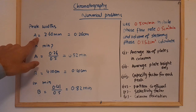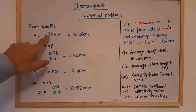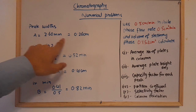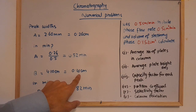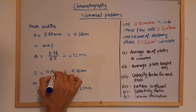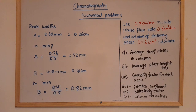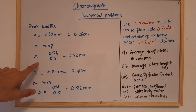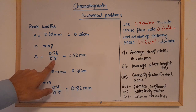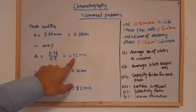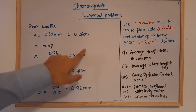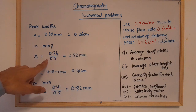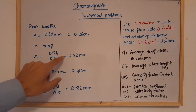For compound A, the peak width is 2.60 mm, which becomes 0.26 cm. For compound B, the peak width is 4.10 mm, which becomes 0.41 cm. To convert to minutes, divide by the recorder speed of 0.5 cm/min. So for A: 0.26 ÷ 0.5 = 0.52 min, and for B: 0.41 ÷ 0.5 = 0.82 min.